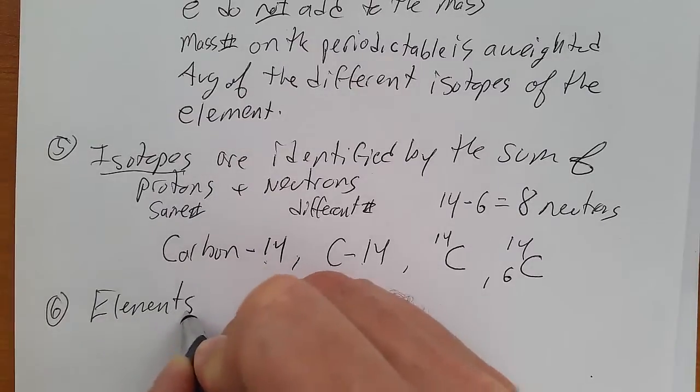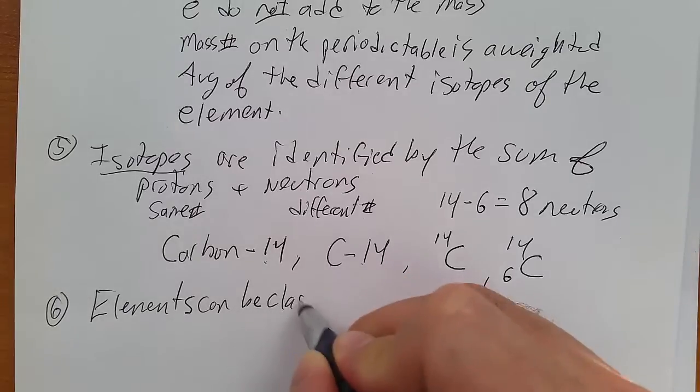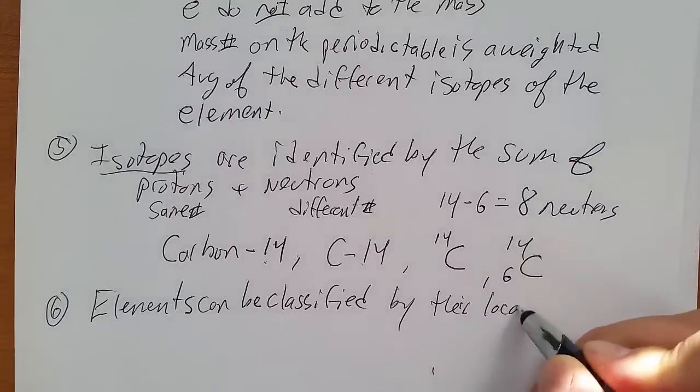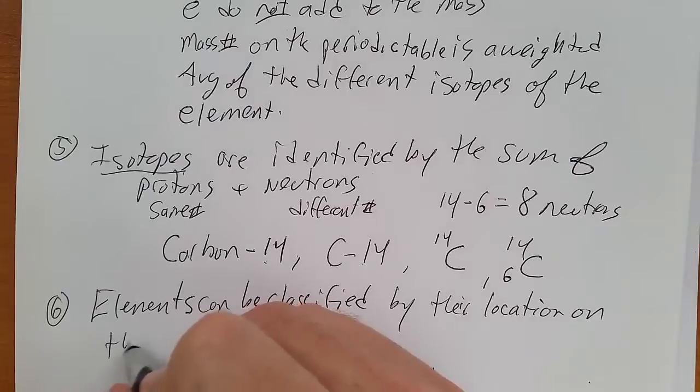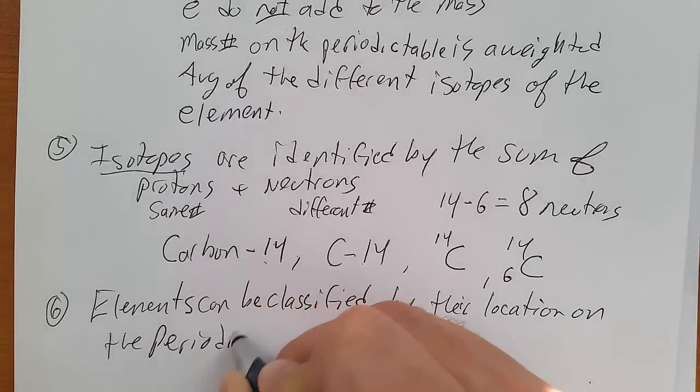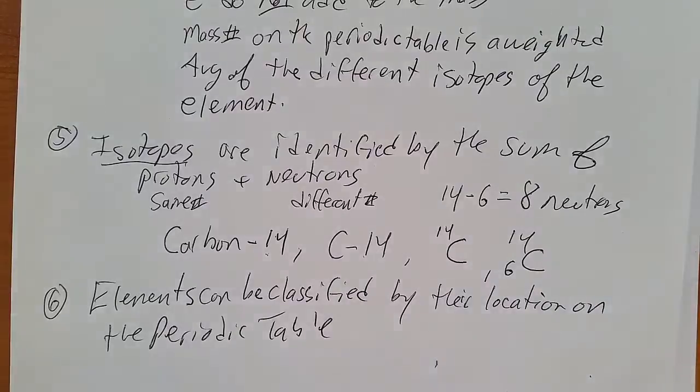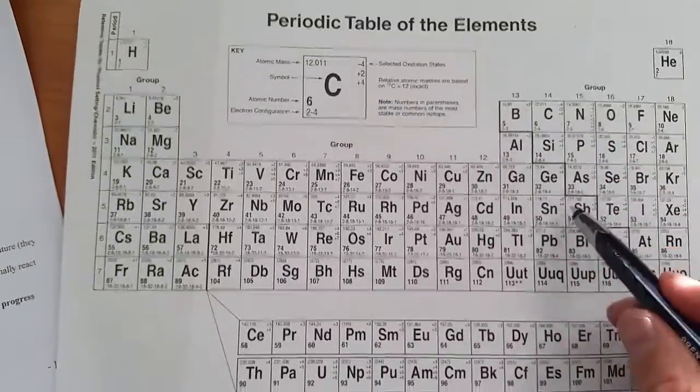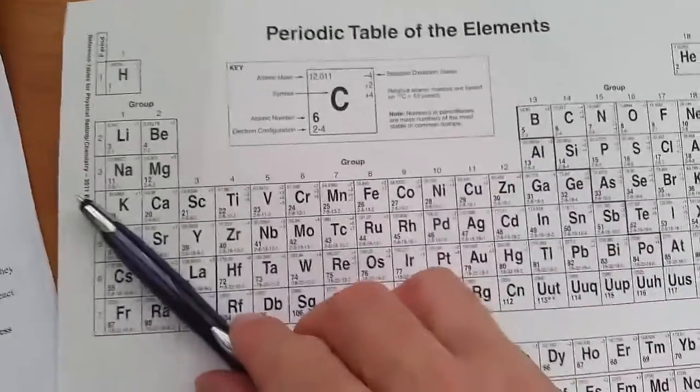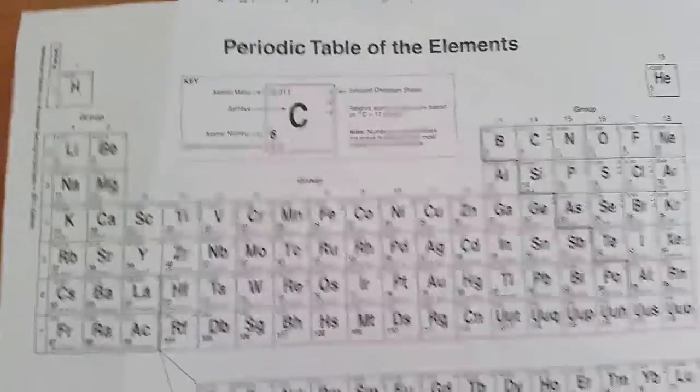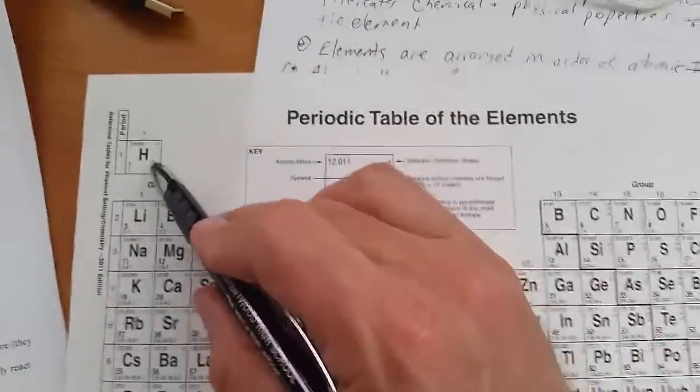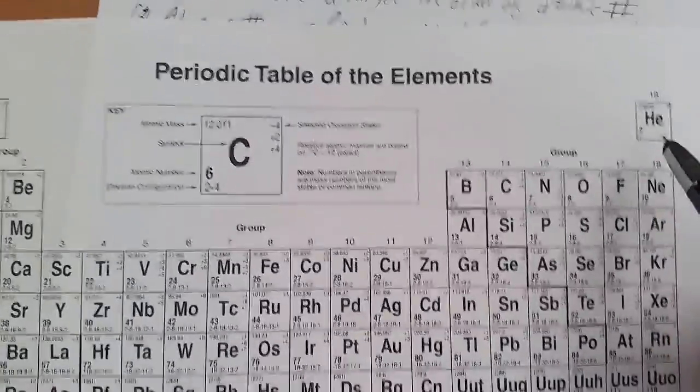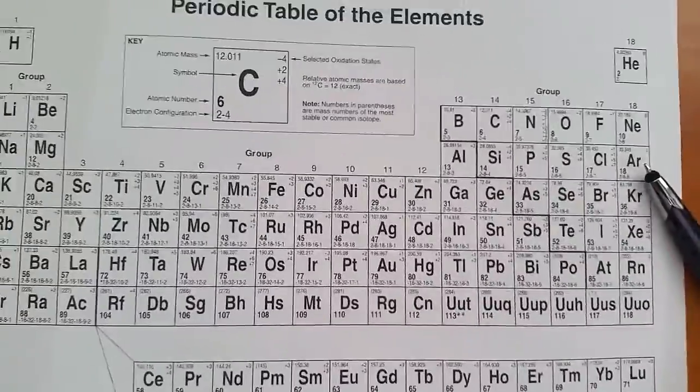Elements can be classified by their location on the periodic table. And this we should know by now. Alright. We have the staircase here. Anything below the stairs is classified as a metal. Everything above the stairs is classified as a nonmetal. Remember that hydrogen is an exception. It technically kind of belongs over here next to helium. It is a nonmetal. So things on the stairs are metalloids except for aluminum.